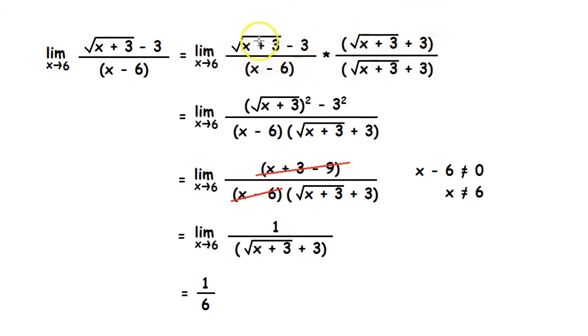Now we can see here that the numerator is in the form (a - b)(a + b). So like previously we can make this as a² - b². So √(x + 3) whole thing squared will be x + 3. Minus 3² will be minus 9. That would be x + 3 - 9 gives us x - 6.